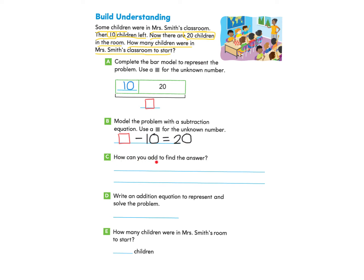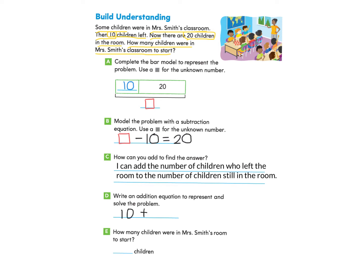Now let's look at part C: how can you add to find the answer? Looking at our bar model, we have two numbers that make the total. We can explain our thinking by writing: I can add the number of children who left the room, which is 10, to the number of children who are still in the room, which is 20. Now part D: write an addition equation. We write the number of students who left plus the students still in the room — 10 plus 20 equals 30.